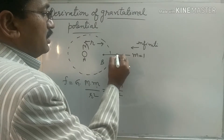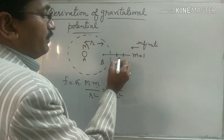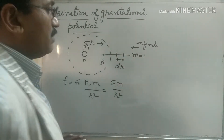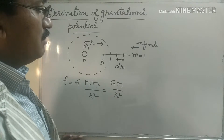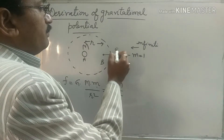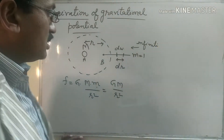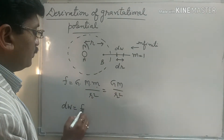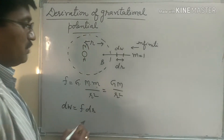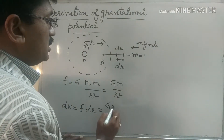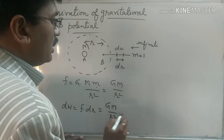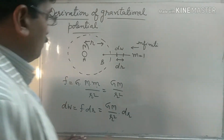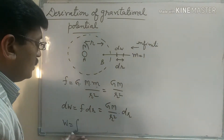Now we calculate the work done for that small distance, which may be represented by dr. We suppose the work done for that dr distance is dW, and dW should be force into displacement. The force is GM upon r squared and the displacement is dr.